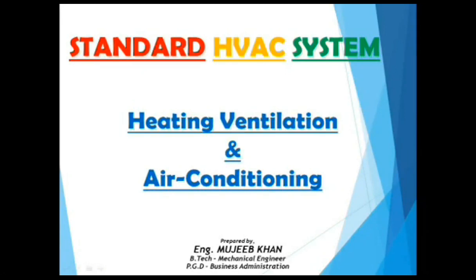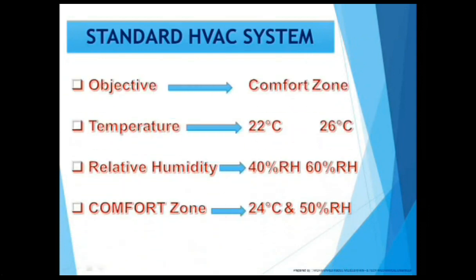Standard HVAC system — heating, ventilation and air conditioning — objective to maintain the comfort zone. The required temperature is 22°C to 26°C. Relative humidity required: 40% RH to 60% RH. Comfort zone is 24°C and 50% RH. The comfort zone is also known as the design temperature for any standard occupancy rooms.